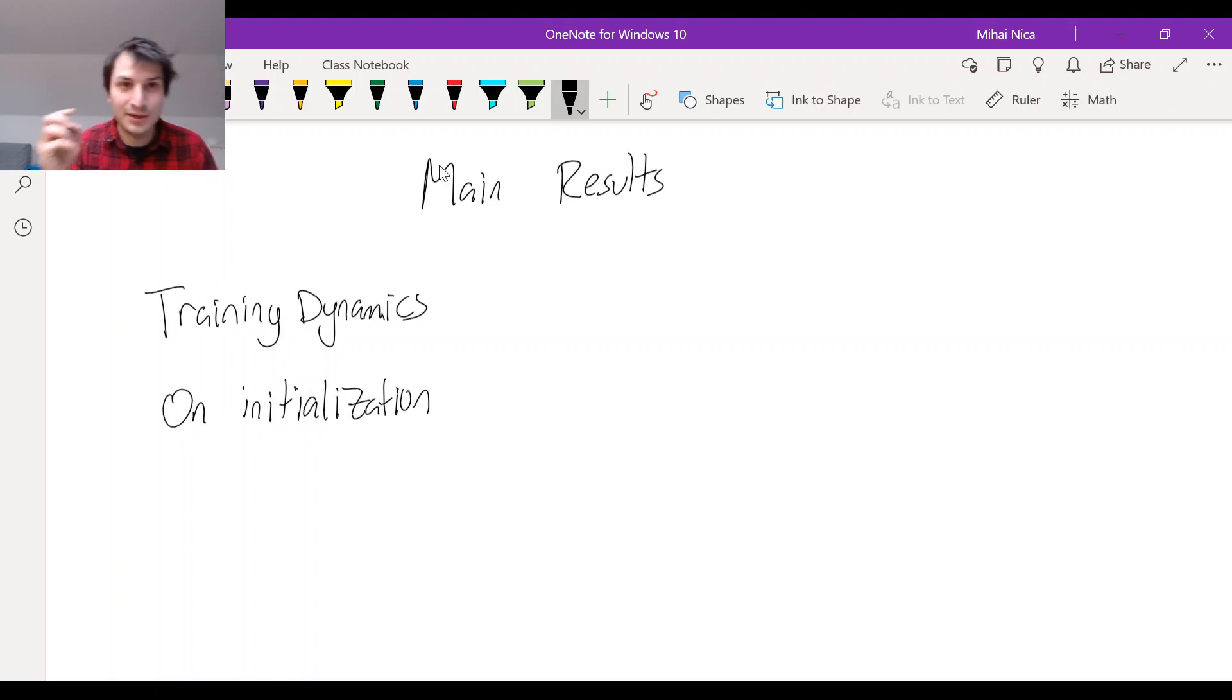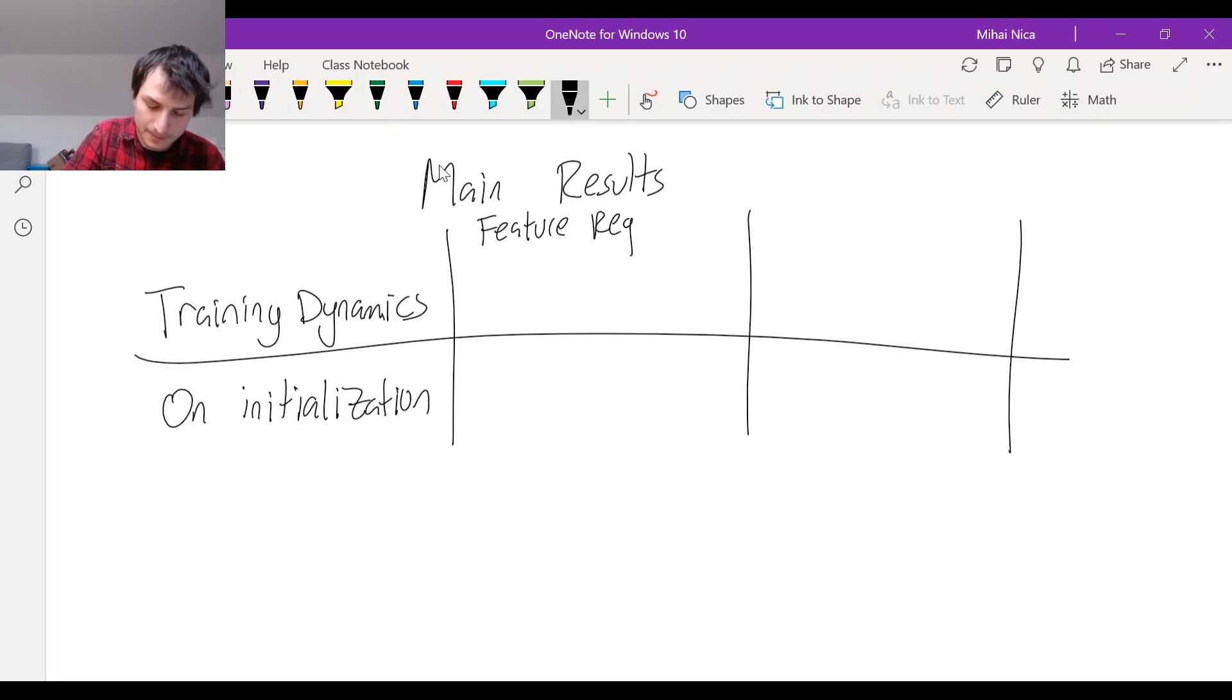I'm going to make a little table here comparing it to what we've done before in the feature regression. So in feature regression, there's one kernel k that does both of these things at the same time.